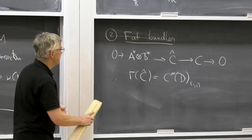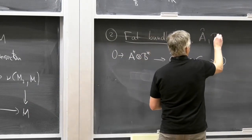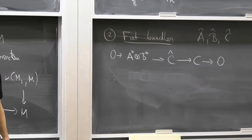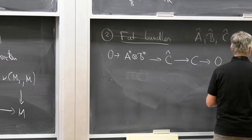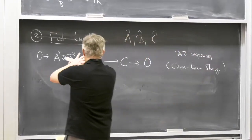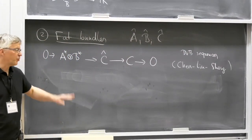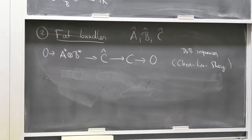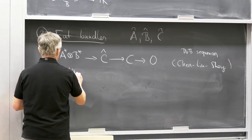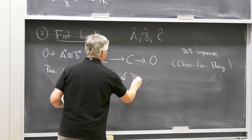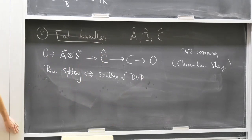You have the same thing for A-hat and B-hat, so for each of them there's an exact sequence. It's known that the exact sequence determines the double vector bundle — this is work of Chen-Liu-Sheng. Furthermore, the splitting of this exact sequence is equivalent to the splitting of the double vector bundle, i.e., the decomposition into A direct sum B and C-star.